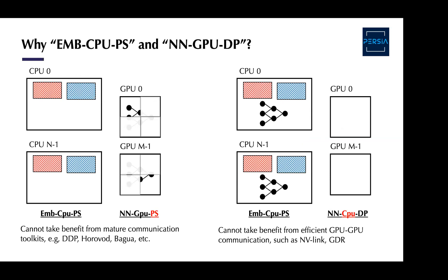One alternative we considered was to split neural network parameters across multiple GPUs, analogous to how we split embedding parameters. But we didn't choose this plan because, while the communication cost would be identical to data parallel, we wouldn't be able to take benefit from mature communication toolkits such as DDP, Horovod, or Bagua developed by our team. Another possibility was storing all parameters on CPUs and only using GPUs for computation — but we prefer to store neural network parameters on GPU to take advantage of faster GPU-to-GPU communication.